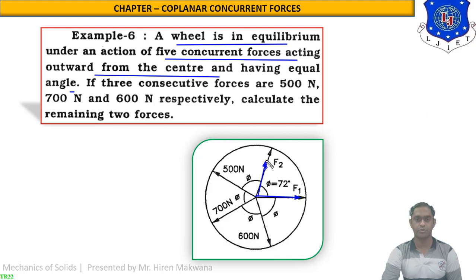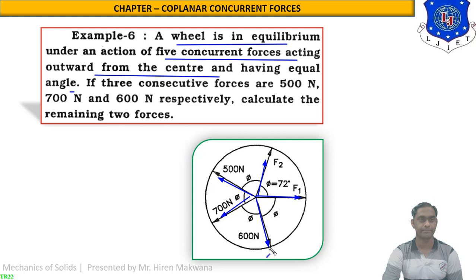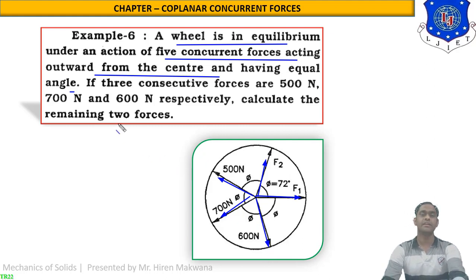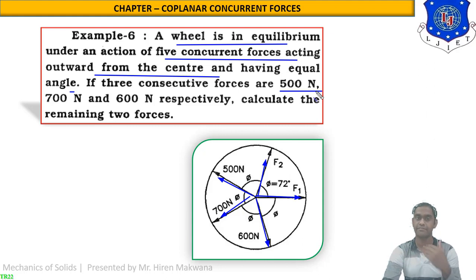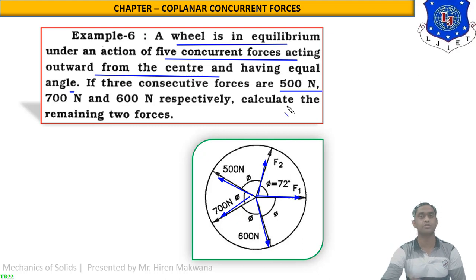You can see the first force F1, the second force F2, the third force 500 newton, the fourth force 700 newton, and the last force 600 newton. What is given in the data is that three consecutive forces are 500 newton, 700 newton, and 600 newton respectively — meaning first 500, then 700, then 600. Calculate the remaining two forces; our target is to find the two unknown forces.